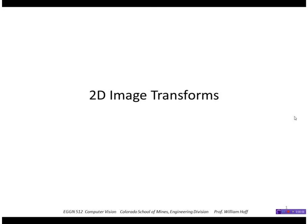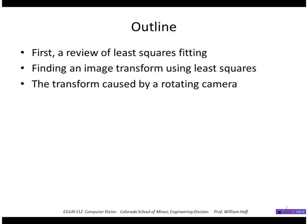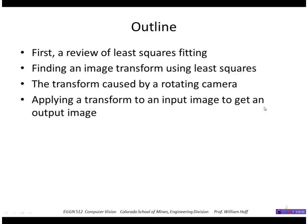I'm going to talk about two-dimensional image transforms. First I'm going to review least squares fitting and then address the topic of finding an image transform using least squares, basically using point correspondences. Then look at the transform caused by a rotating camera, then figure out how to apply a transform to an input image to get an output image, and finally look at the example application of generating an ortho photo.